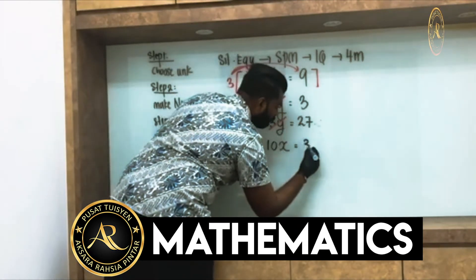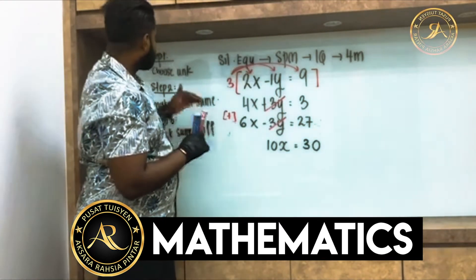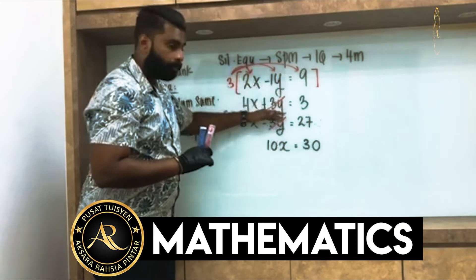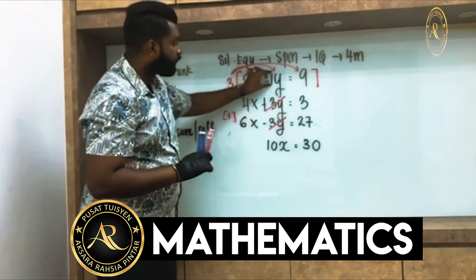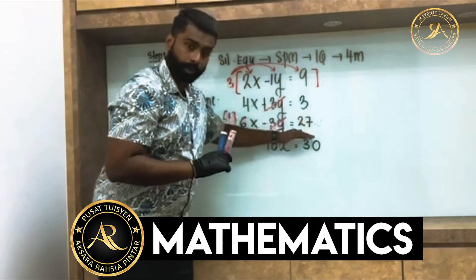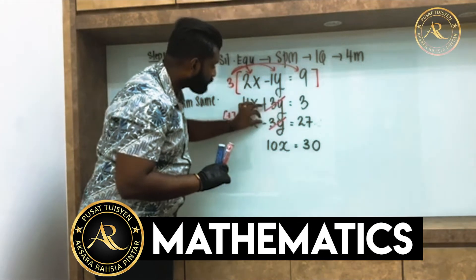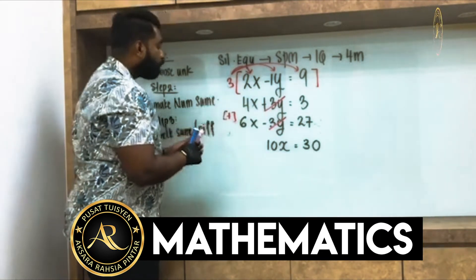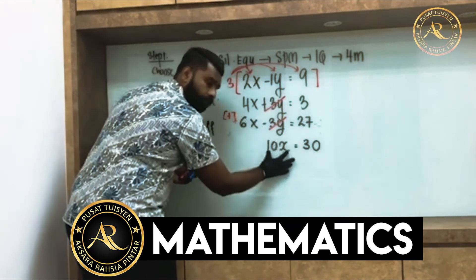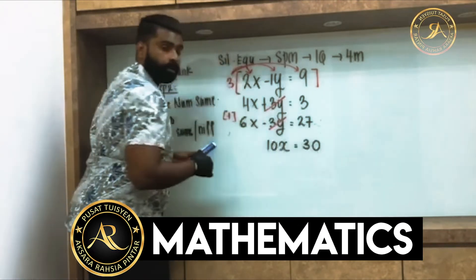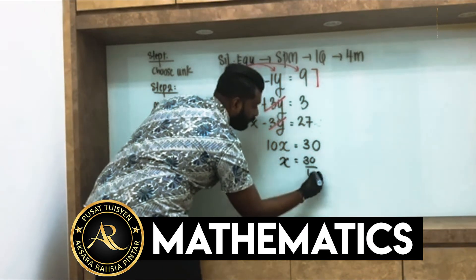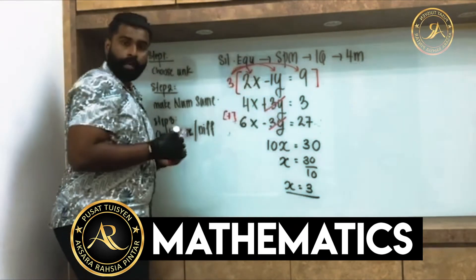So 4x plus 6x equals 10x, and 3 plus 27 equals 30. Therefore 10x = 30, so x equals 30 over 10, which gives x equals 3. We chose y, made the coefficients the same, checked same or different (different → plus), eliminated y, and solved for x = 3.